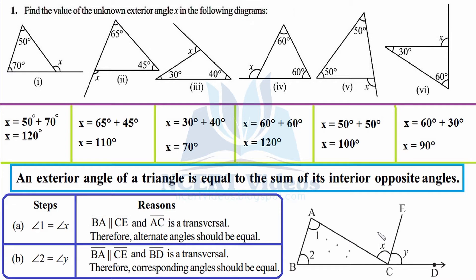Now let's prove the theorem with logical reasons. In order to prove that the interior opposite angles are equal to the exterior angle, we draw a line segment CE parallel to the opposite side AB. When you draw this, we get some interesting facts. These are parallel lines, and whenever a parallel line is intersected by a transversal, various angles are formed. Here a Z-formation is happening.